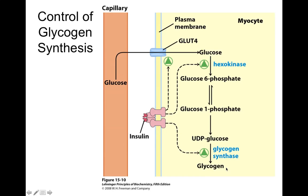Glycogen synthase is an enzyme that makes glycogen for energy storage. It's going to be allosterically inhibited when we have high levels of ATP, ADP, and inorganic phosphate, and allosterically activated by glucose-6-phosphate. So insulin really affects three steps of this pathway: glucose transport, hexokinase activity, and glycogen synthesis, making it an important role in glycogen synthesis overall.